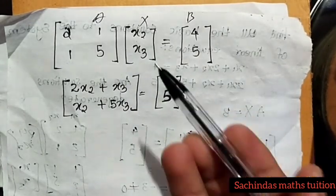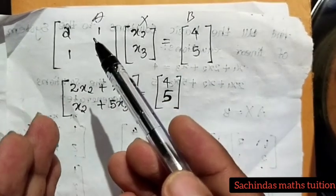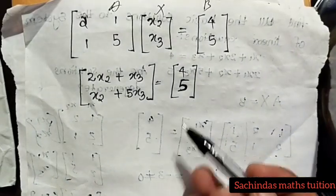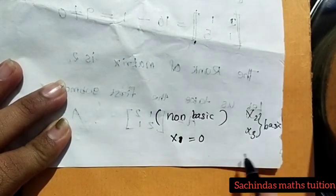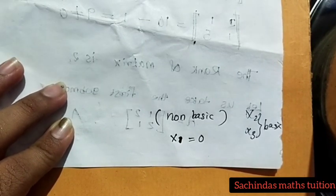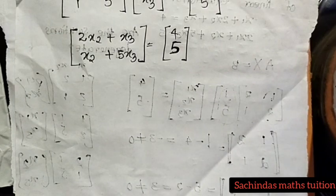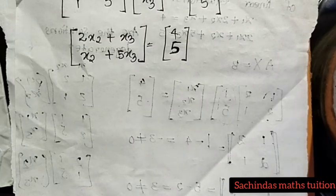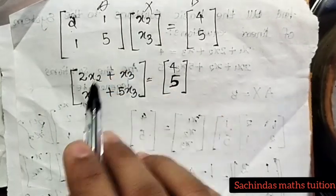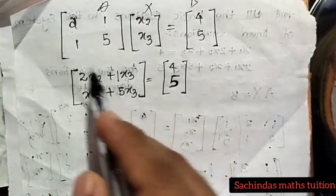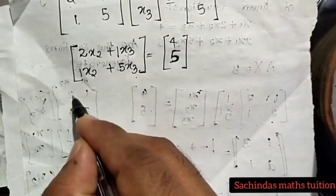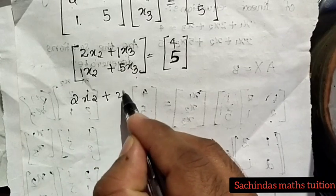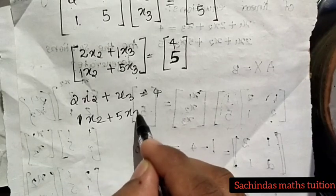Taking x2 and x3 as basic variables with the second and third columns: 2x2 plus x3 equals 4, and x2 plus 5x3 equals 5. We check the coefficient — coefficient is 1 and 2. We multiply to eliminate.